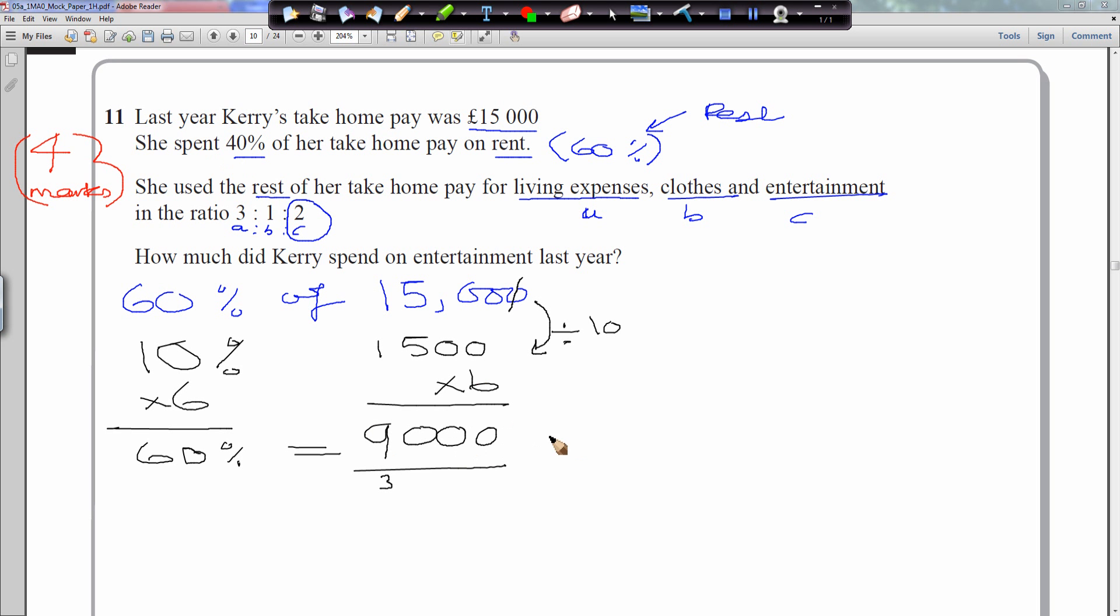And this $9,000 is divided in the ratio of 3 to 1 to 2. When you divide by a ratio, we have to add it up first. So 3 plus 1 plus 2 gives you 6.